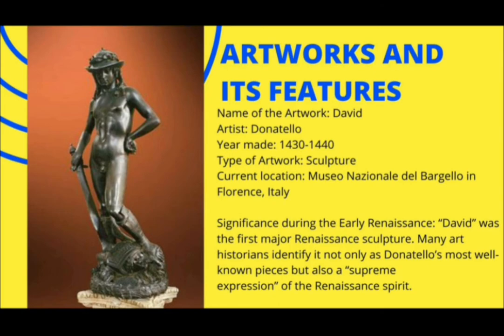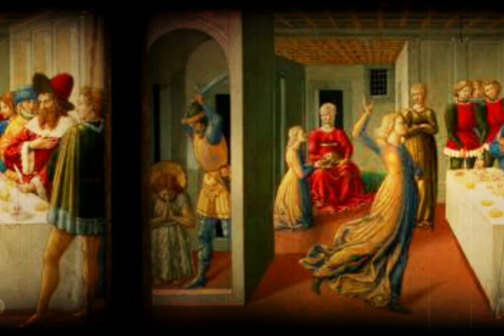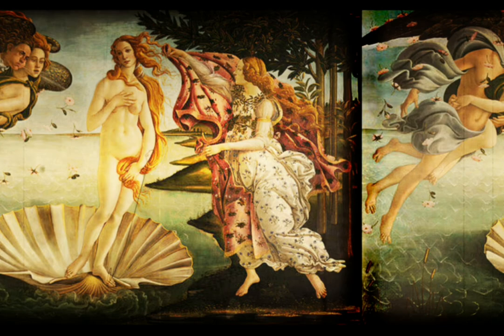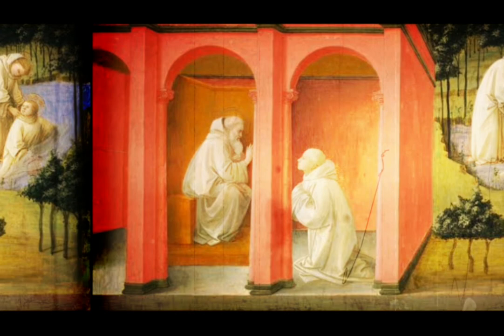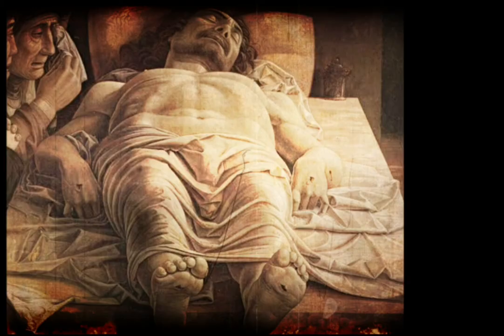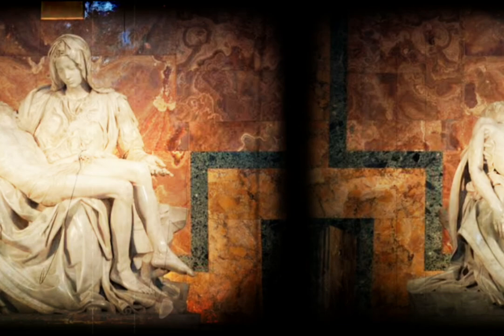The next artwork is the David. It is a bronze statue of the biblical hero David, made by the Italian early Renaissance sculptor Donatello. It is currently located in Museo Nazionale del Bargello in Florence, Italy. David was the first major Renaissance sculpture. Many art historians identify it not only as Donatello's most well-known piece, but also as a supreme expression of the Renaissance spirit. Techniques such as perspective, shadows, and light were used by the artists to add depth to their artworks. By the end of the 15th century, Renaissance art had reached the high point under the powerful Pope Leo X, hence the High Renaissance. All the art styles developed, styles defined, and new advancements and approaches in painting and architecture introduced in the early Renaissance cultivated the High Renaissance in the late 1400s to early 1600s.